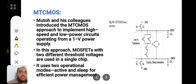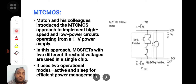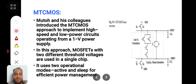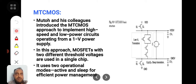The next concept is MTC CMOS — Multiple Threshold CMOS technology. The previous topic was Variable Threshold; this is the Multiple Threshold CMOS concept. This concept was developed by Muto and his colleagues. This approach is used to implement high-speed and low-power circuits. There should be a trade-off between both high speed and low power.